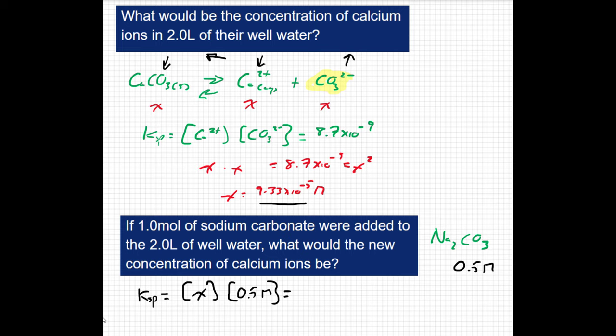But our equilibrium constant is still going to be 8.7 times 10 to the negative 9. If I solve for x here, I get 1.74 times 10 to the negative 8. Again, that's molar. So x is representing our concentration of calcium ion.